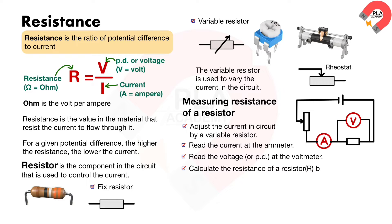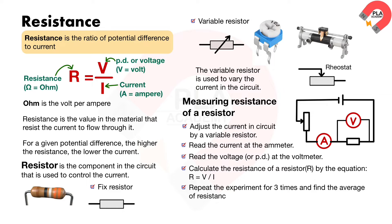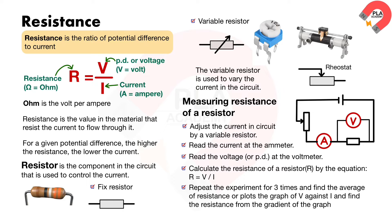Repeat the experiment and find the average of the resistance, or plot the graph of V against I and find the resistance from the gradient of the graph.